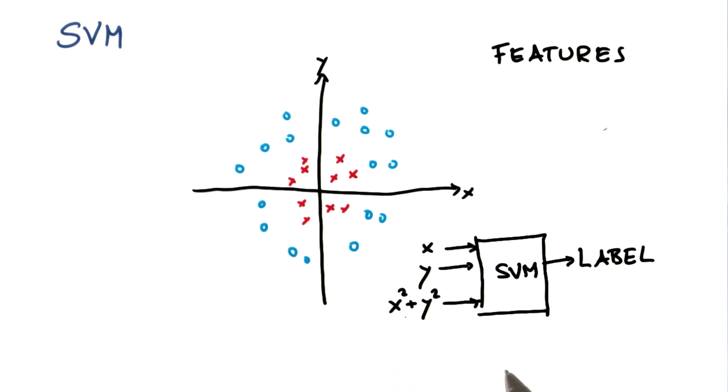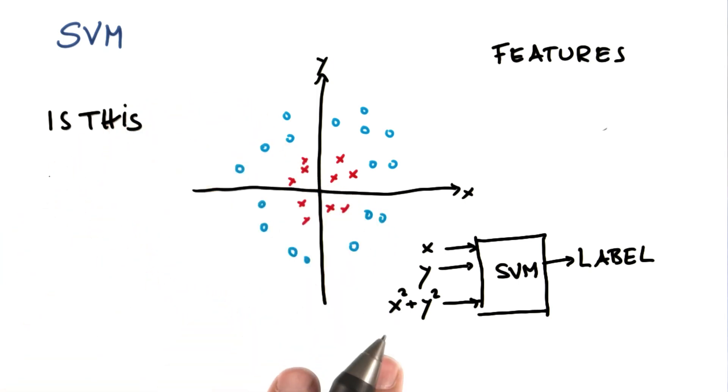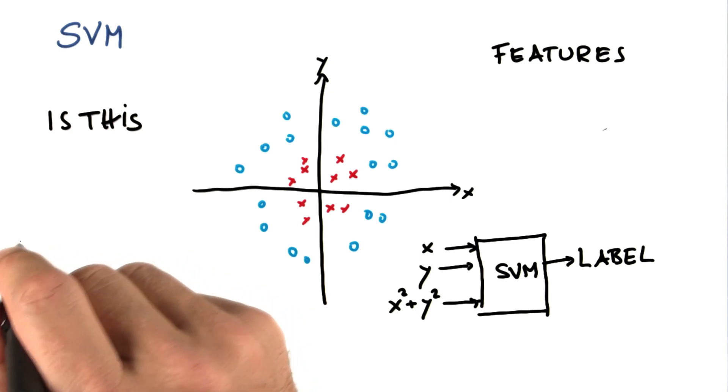And here's my $100,000 question. Do support vector machines work right now, or put differently, is this new situation linearly separable?